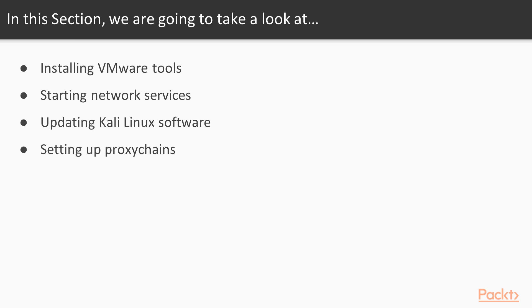We'll then learn how to start the different network services on Kali Linux — most importantly services like SSH and the Apache 2 web server. Then we'll move into our quick win section where I'll show you how to hack a WordPress installation, looking at some basic exploitation of WordPress to introduce you to the world of hacking.